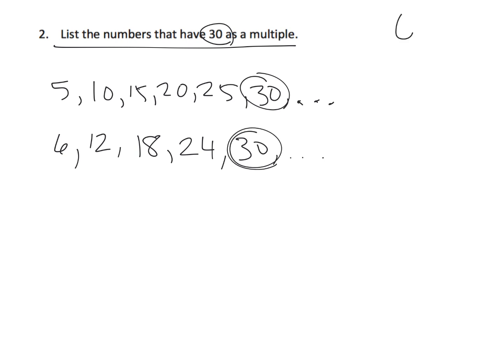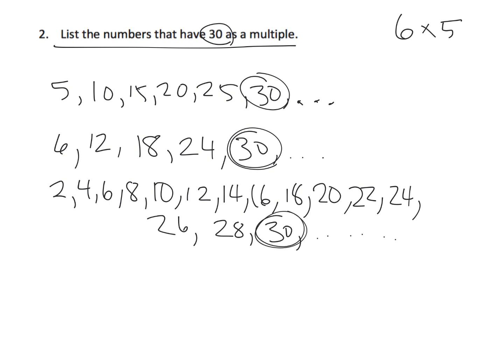Can we think of another one? We've done 6 times 5, so that's two factors, 6 and 5. Sure, you can think of 2. So you could go 2, 4, 6, 8, 10, 12, 14, 16, 18, 20, 22, 24, 26, 28, and 30, and so on. So 2 is another one.